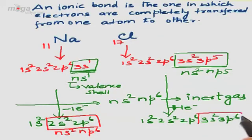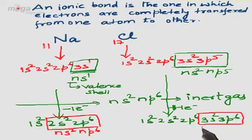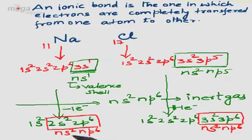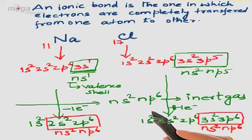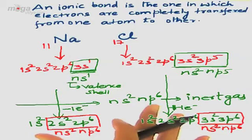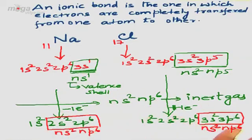In the same way, in chlorine also, after the gain of 1 electron from sodium, its new configuration is 3S², 3P⁶, which resembles NS², NP⁶. Hence, in both cases — after the loss of 1 electron from sodium, its configuration resembles inert gas configuration NS², NP⁶ — and after the gain of 1 electron by chlorine, its new configuration 3S², 3P⁶ also resembles NS², NP⁶. This is the process observed in ionic bonding.